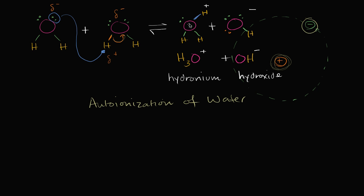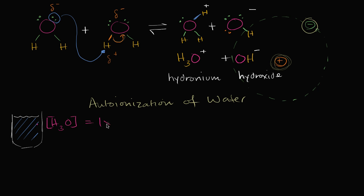So you might say: how frequently would I find hydronium ions in water? Well, the concentration of H3O in typical water — and you put brackets around something to denote concentration — is 1×10⁻⁷ molar. Molar just means moles per liter, so this is the same thing as 1×10⁻⁷ moles per liter.